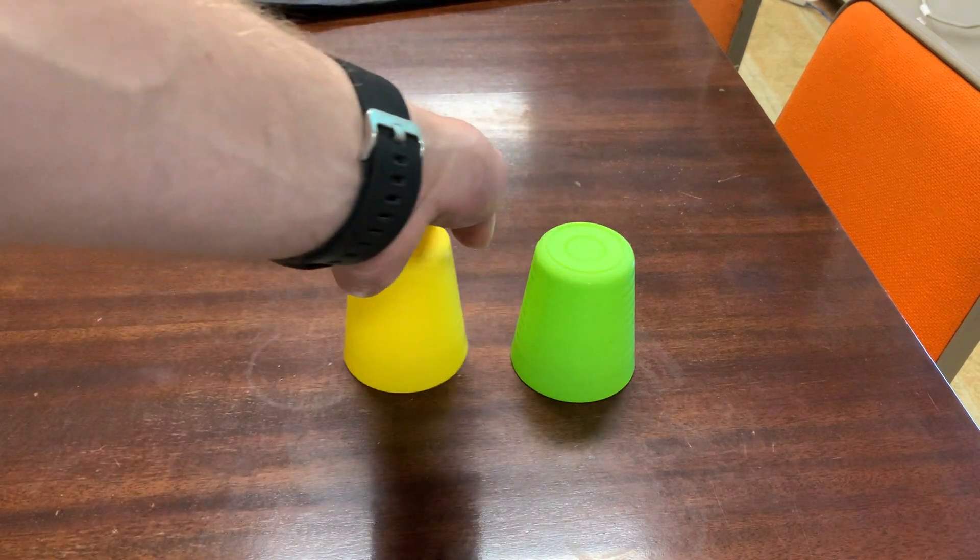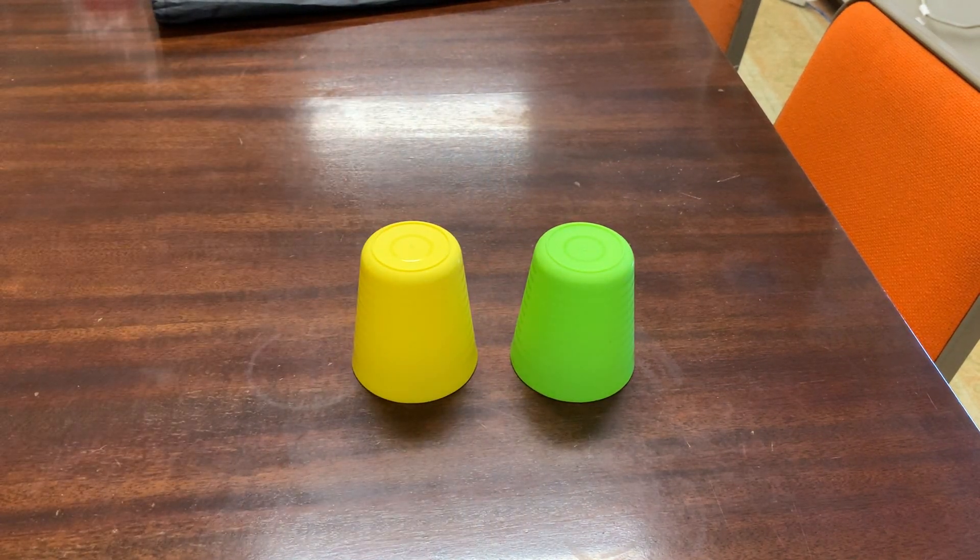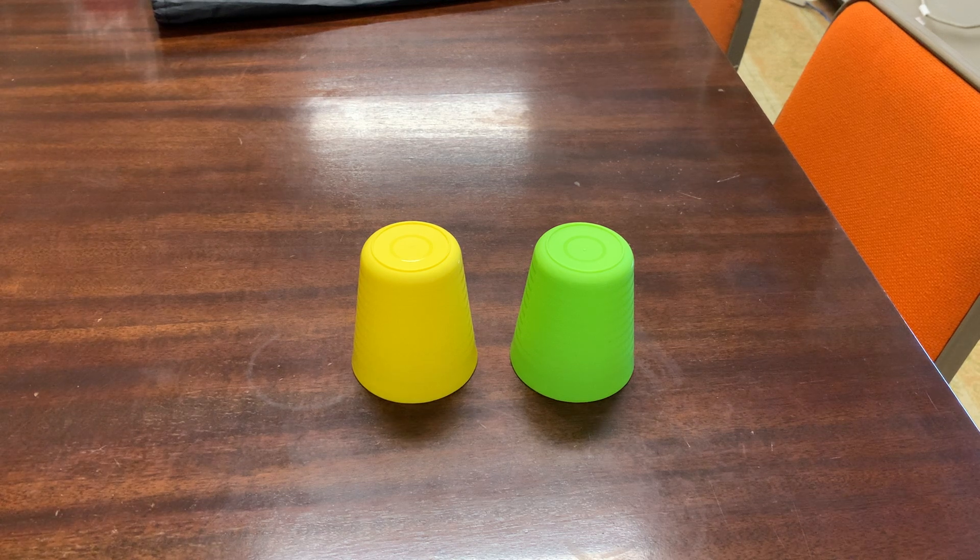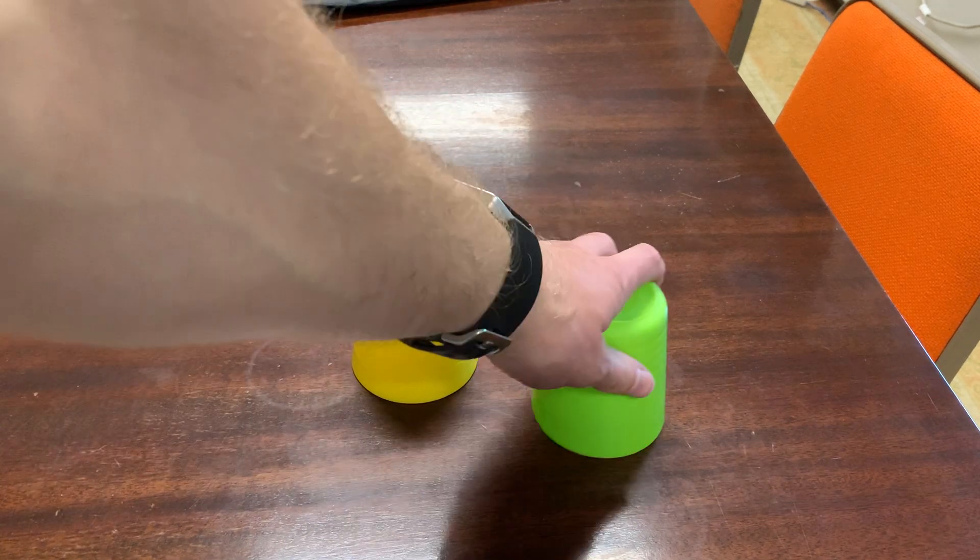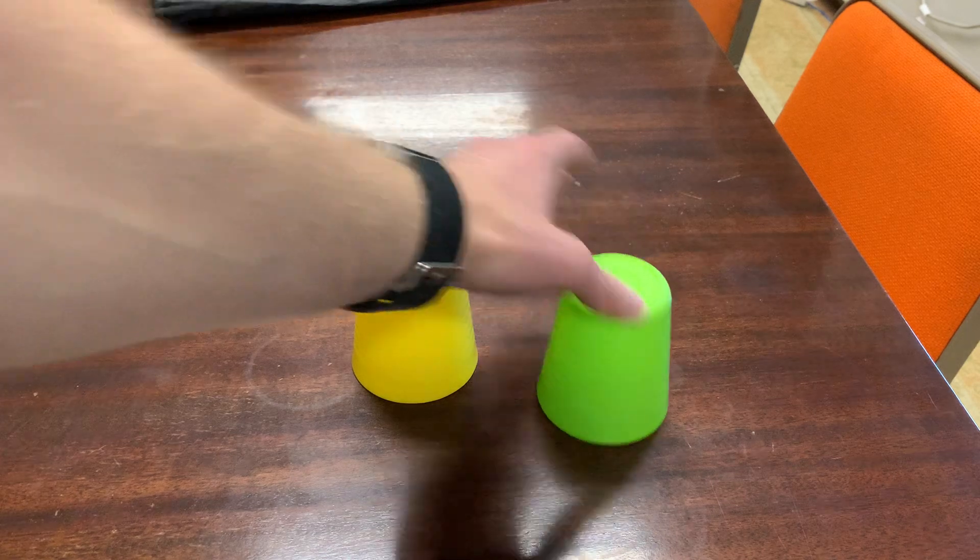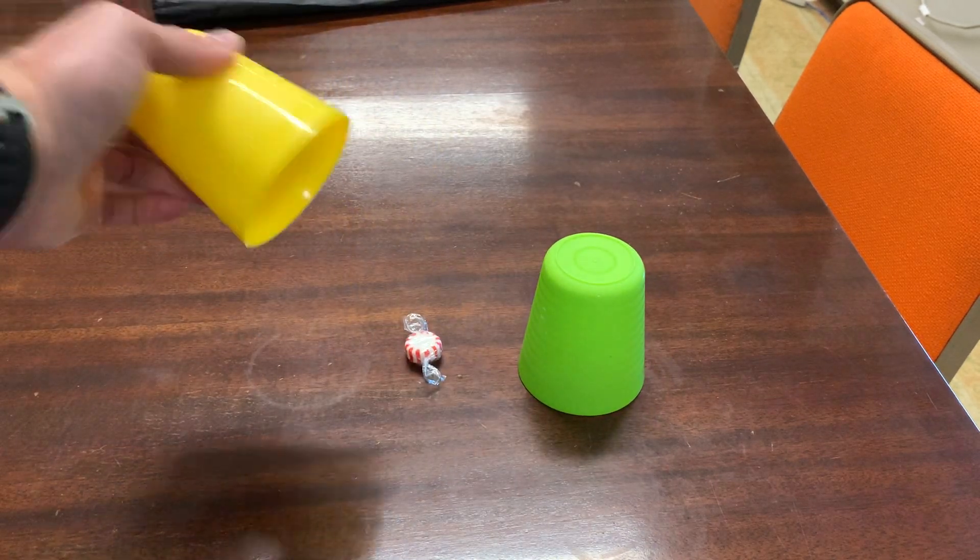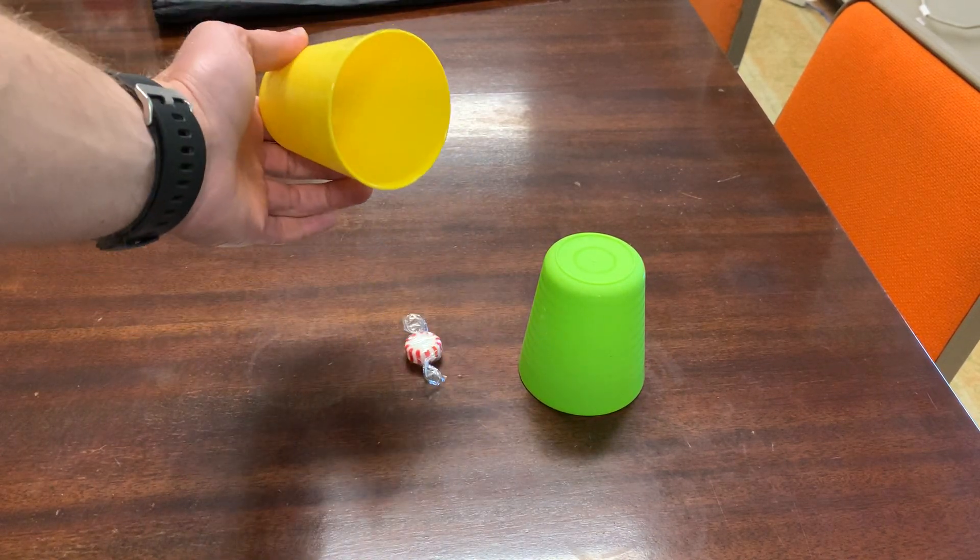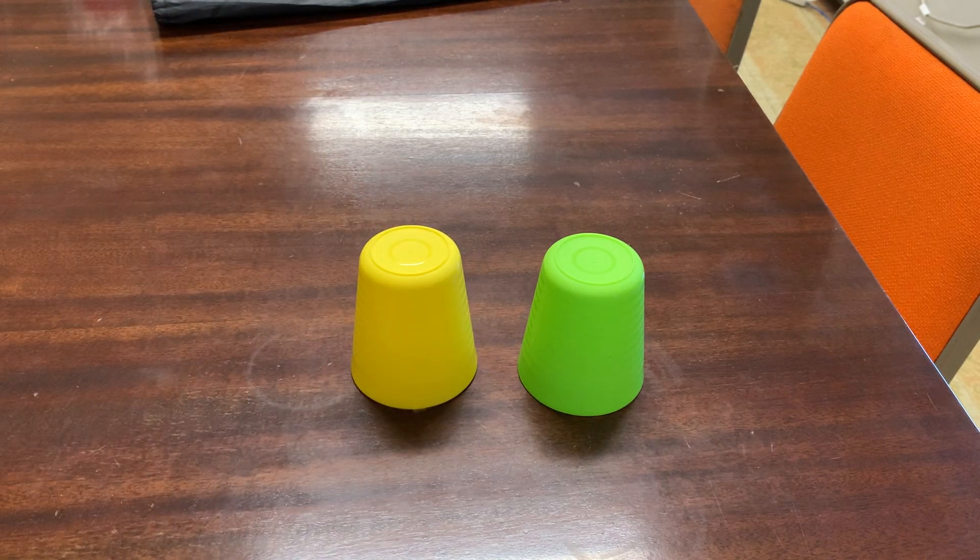Okay, so change up the cup colors a little bit. So this time we have a yellow and a green cup, and in this case we learn there's nothing under the green, but there is something under the yellow. So eventually the squirrel monkey picks the yellow cup.